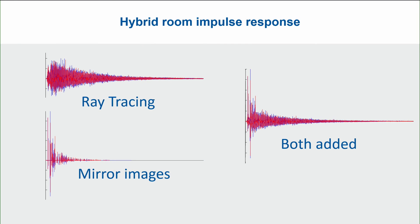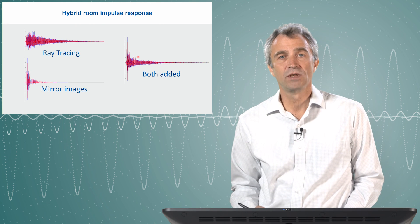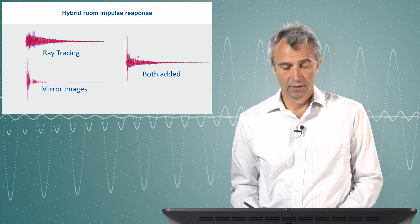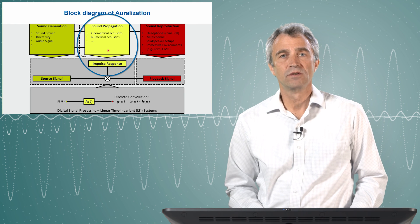Finally, we can add the two contributions: the first from image sources, dealing with early specular reflections, and the second from ray tracing, dealing with scattering and the late reverb. Adding both yields the final impulse response shown on the right side. We see a plot with red and blue colors, referring to a binaural impulse response based on HRTF processing for the right ear and the left ear. This is the basis for what is called auralization, which will be covered in the next lecture. At the end of this lecture, we have arrived at the impulse response, now ready for further processing.